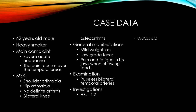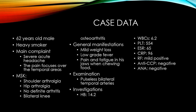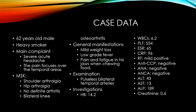Investigations: hemoglobin within normal, WBC within normal, platelets show thrombocytosis, ESR high, CRP elevated. Rheumatoid factor mildly positive, anti-CCP negative, ANA negative, ANCA negative. ALT slightly elevated at 43 (upper limit 40), AST within normal, alkaline phosphatase within normal. And finally HLA-DR4 positive.